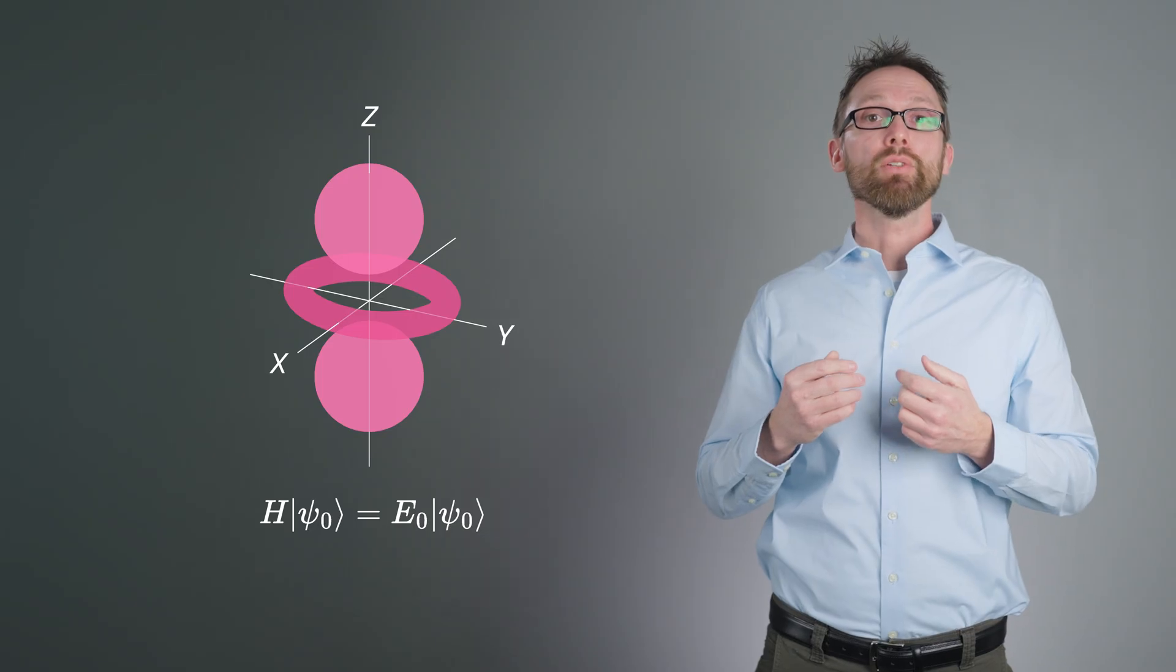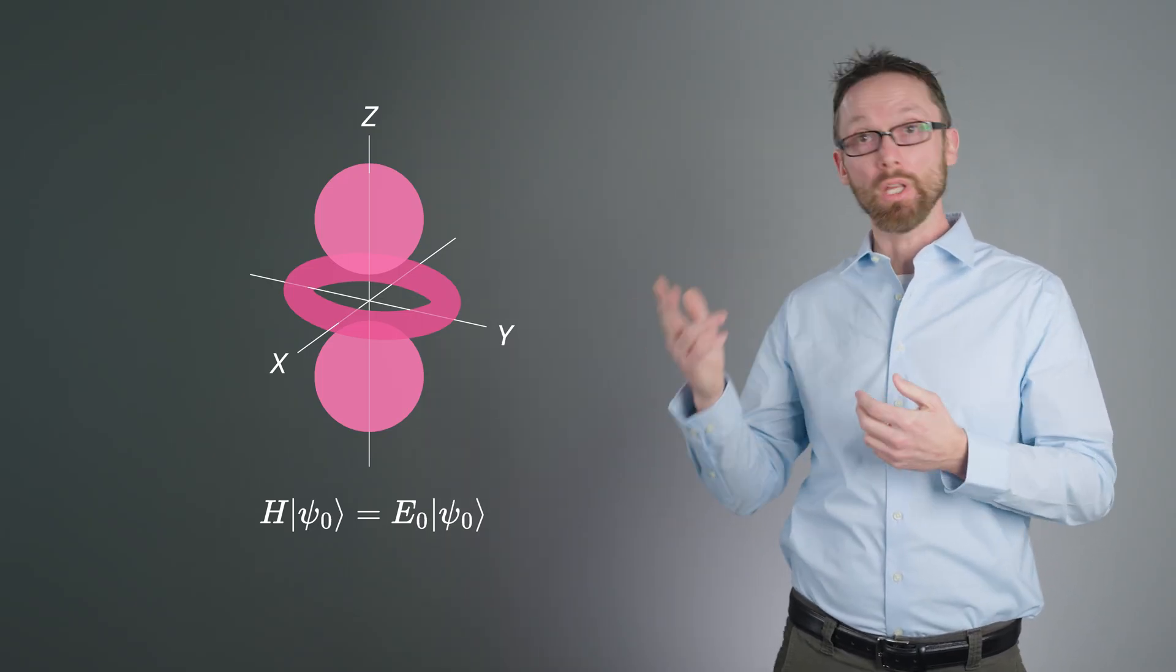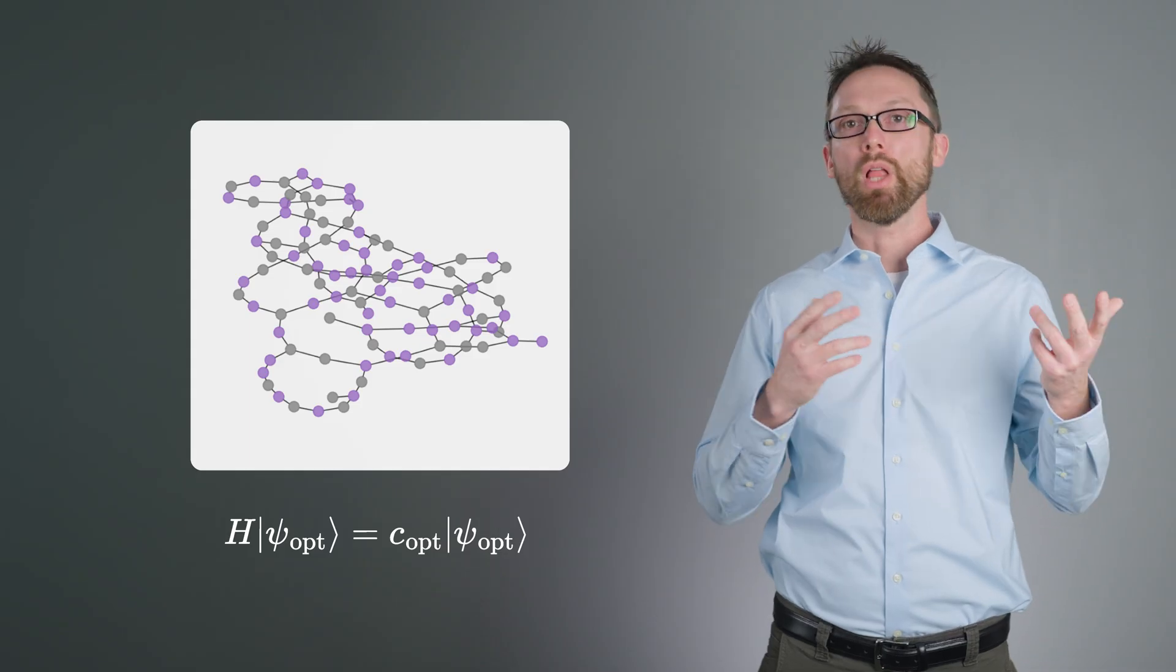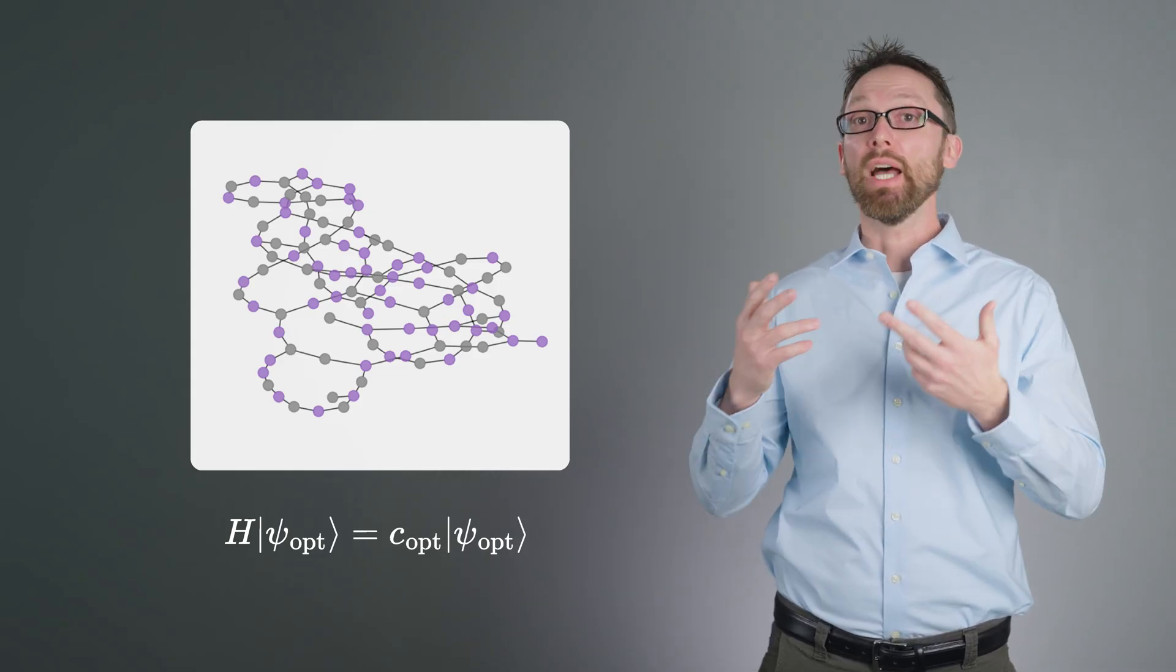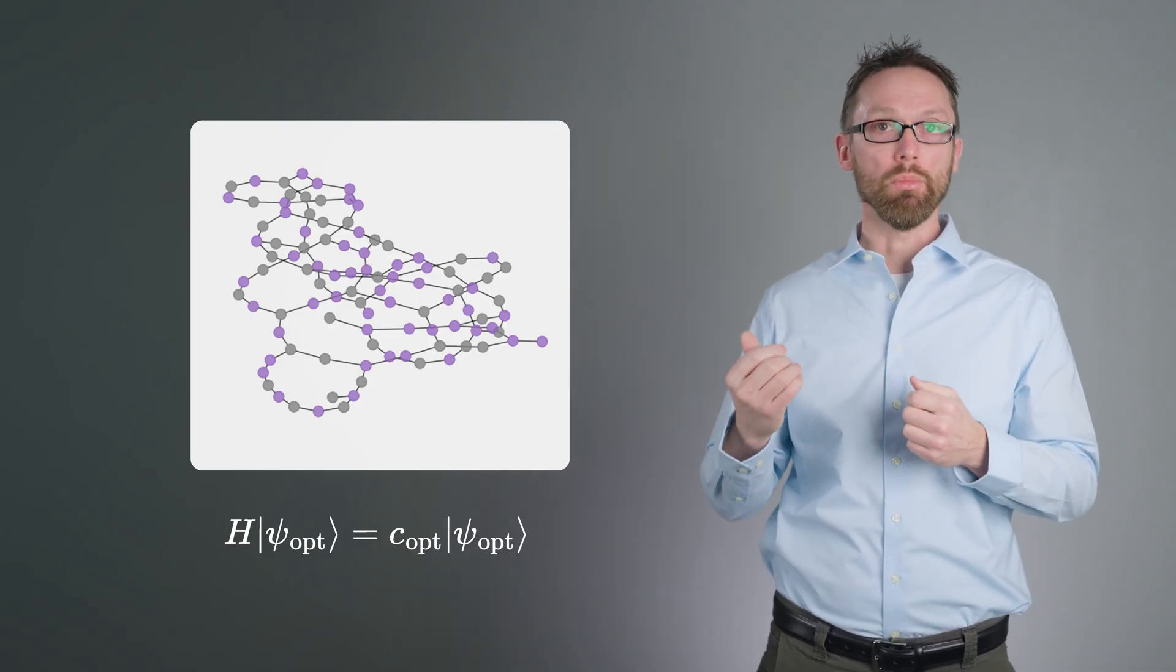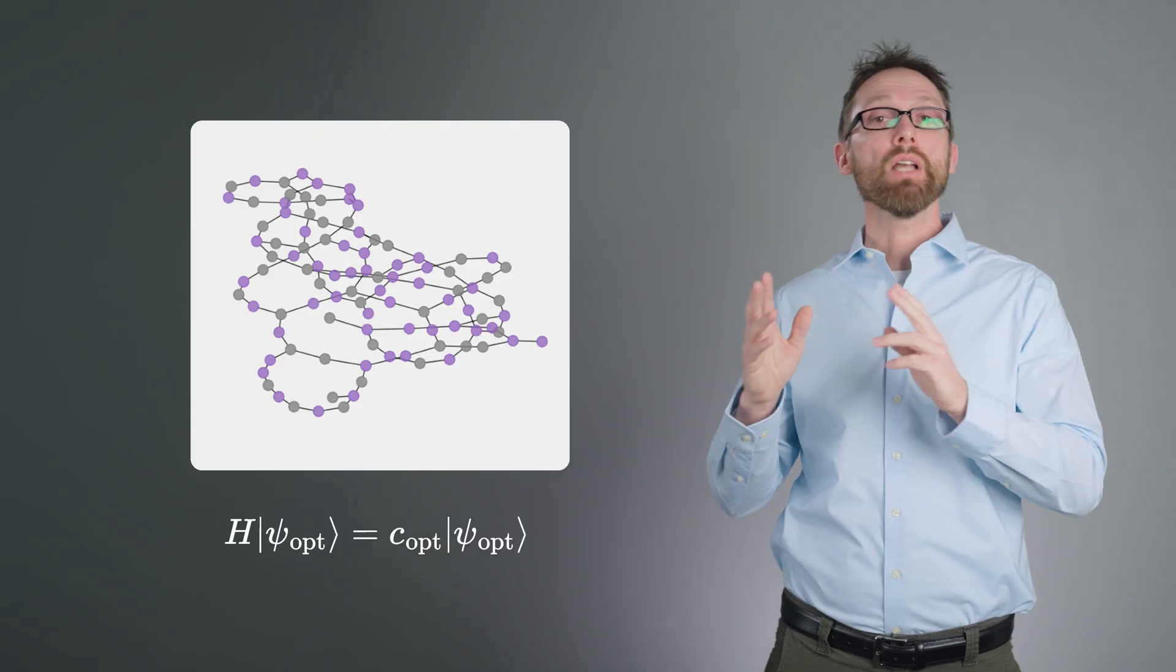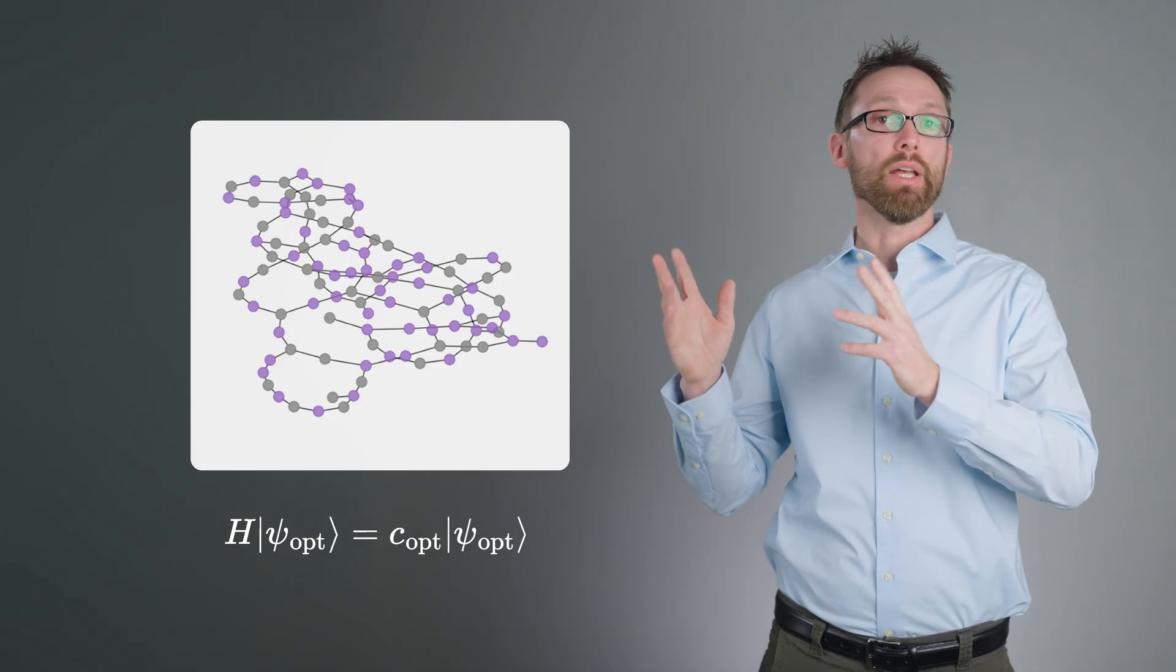Or the matrix could describe a complicated cost function associated with combinatorial optimization problems, such as in logistics, and the eigenstate ψ_opt would be an optimal solution of the problem, like a binary string labeling a cut in a graph of a distribution network. In practice, it's common to hear the term Hamiltonian used for all matrices of interest even outside the physical sciences.